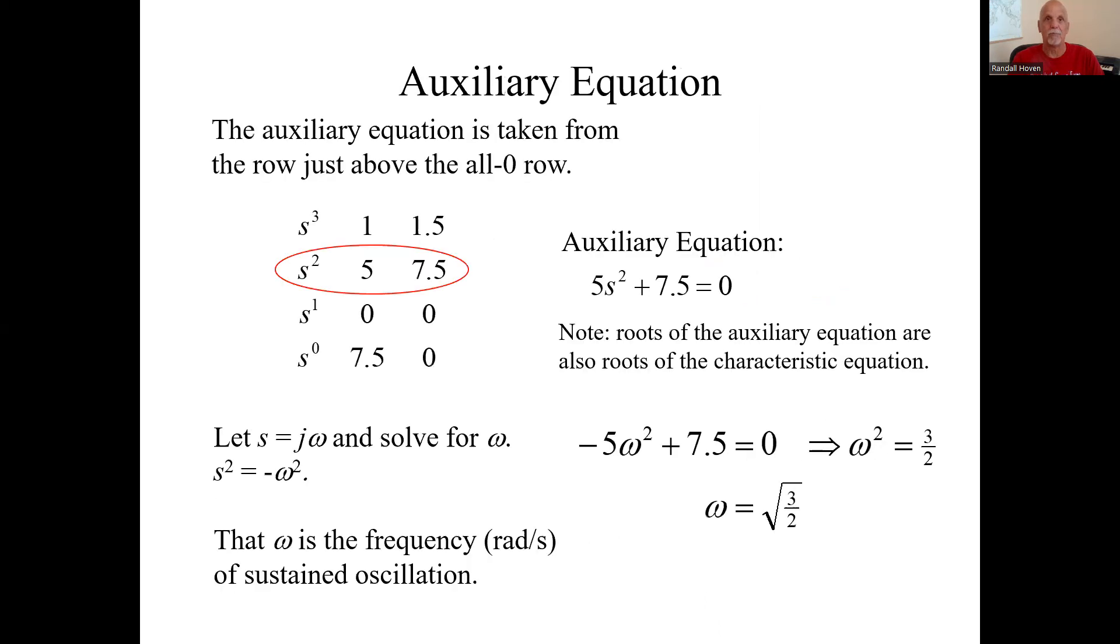Let me tell you how to calculate that. We're going to need the auxiliary equation. That is taken from the row just above the all zero row. S to the one was the all zero row. We get the auxiliary equation from the row above it. What does it mean? This is the S squared row. So the power associated with this term is squared. We skip a power. The power associated with this term is S to the zero. So this is the auxiliary equation. 5S squared plus 7.5. Here's a fact. The roots of the auxiliary equation are also roots of the characteristic equation. So this tells you where poles of the overall system are going to be.